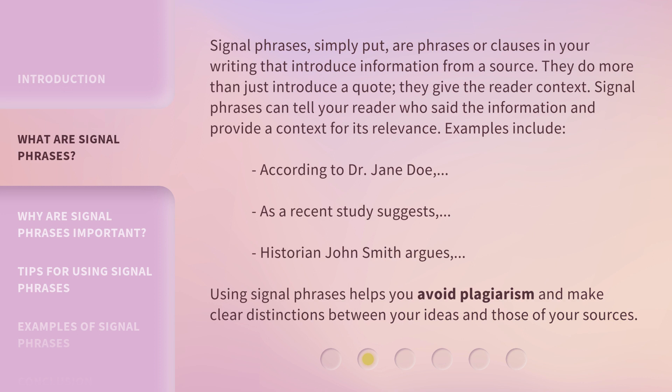Signal phrases, simply put, are phrases or clauses in your writing that introduce information from a source. They do more than just introduce a quote — they give the reader context. Signal phrases can tell your reader who said the information and provide context for its relevance. Examples include: 'According to Dr. Jane Doe,' 'as a recent study suggests,' or 'historian John Smith argues.' Using signal phrases helps you avoid plagiarism and make clear distinctions between your ideas and those of your sources.